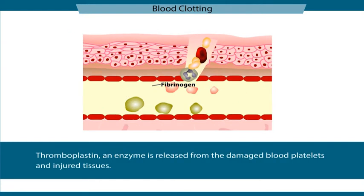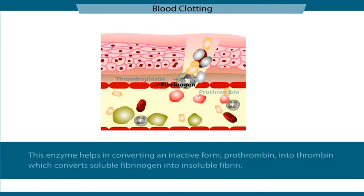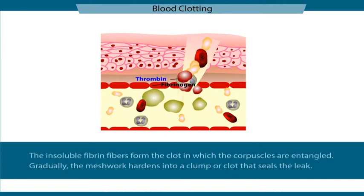The mechanism of coagulation starts with the release of thromboplastin from the damaged blood platelets and injured tissues. This enzyme helps in converting an inactive plasma protein named prothrombin into thrombin, which converts soluble fibrinogen to insoluble fibrin.